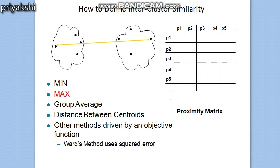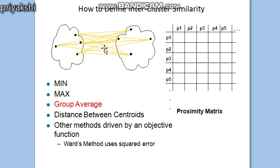There is another method known as the group average method. In the group average method, it defines the cluster proximity to be the average pairwise proximity, or the average length of edges of all pairs of points from different clusters. We consider the distance between all the points, take the average, and that defines the cluster proximity. In another case, when using the centroid method, the cluster proximity is defined as the proximity between the two cluster centroids.